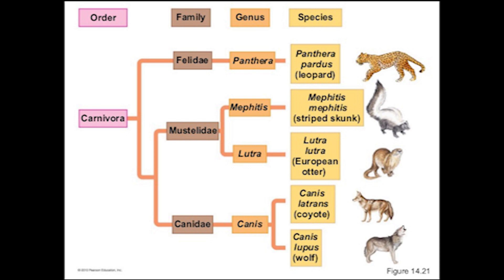For example, in this evolutionary tree showing the relationships between five animals, the coyote and the wolf are in the same genus, so both their names start with Canis. Canis latrans is the coyote and Canis lupus is the wolf. In the same way, Homo erectus, Homo neanderthalensis, and Homo sapiens are all in the same genus group.